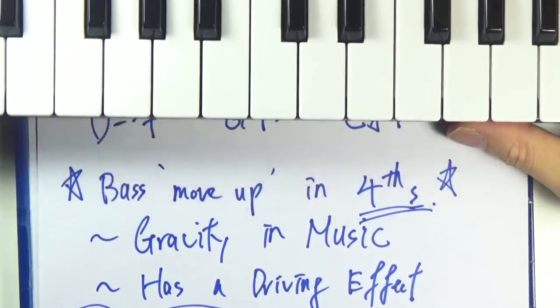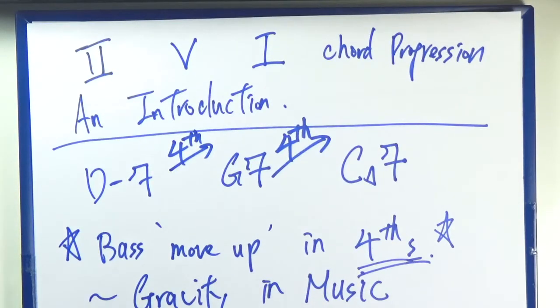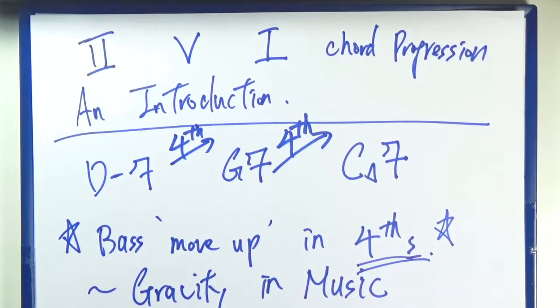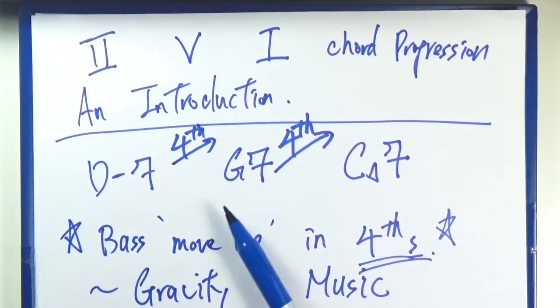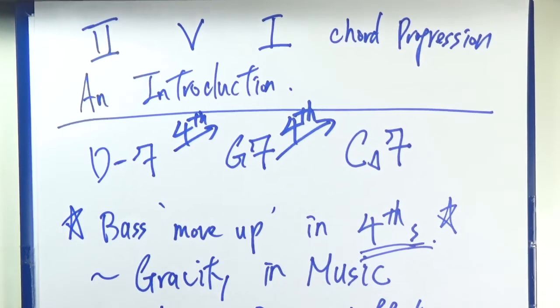And the reason I say in fourths is that it is easier to count the intervals that way. So you are always counting up: D, E, F, G; G, A, B, C; and so on and so forth.